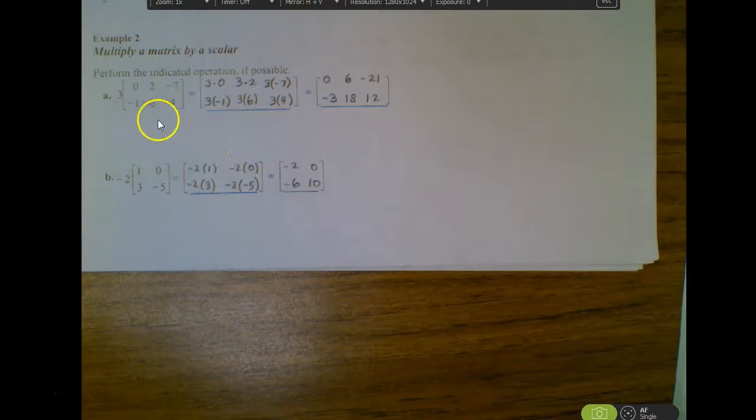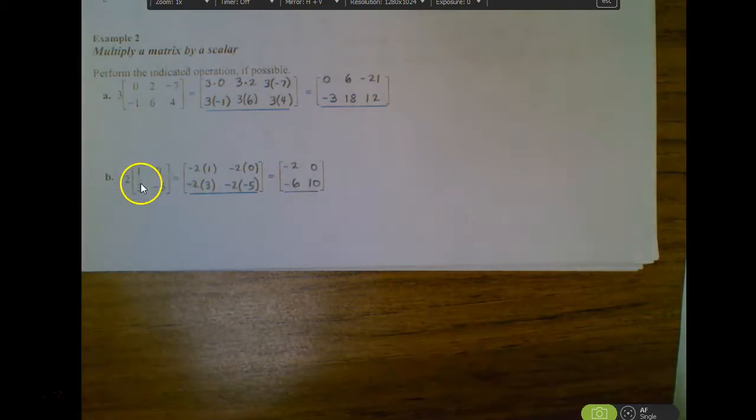Notice just like the ones up above, the dimensions do not change. This was a two by three, our answer is still a two by three matrix. So that should never change. Here's just a scalar of negative two. Same deal. You would just distribute that to all four elements, and this would be the result.